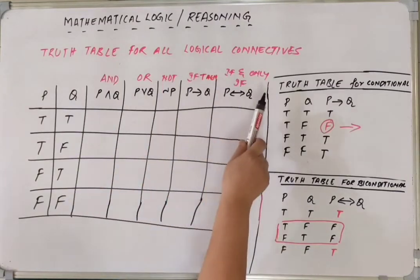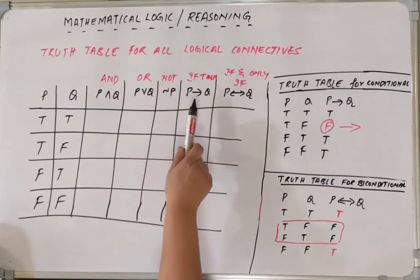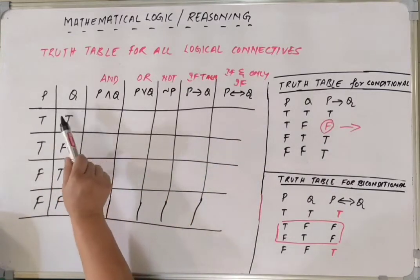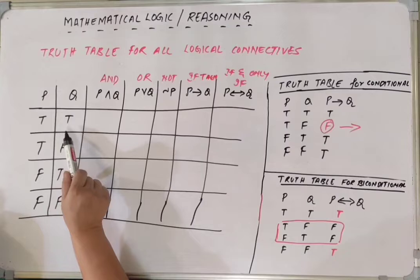So here is the truth table for all logical connectives and or not if then if and only if. Now we have P and Q with all combinations of true and false here.